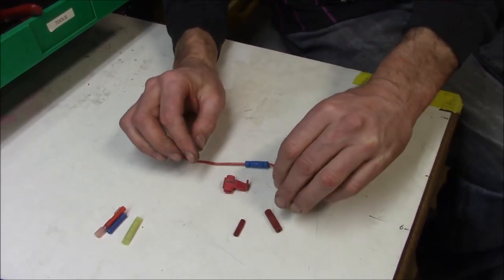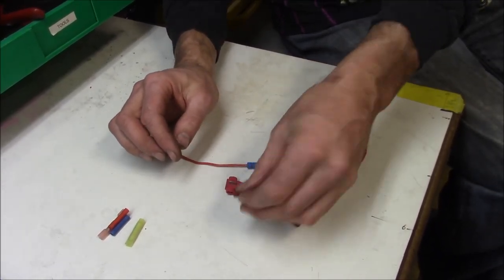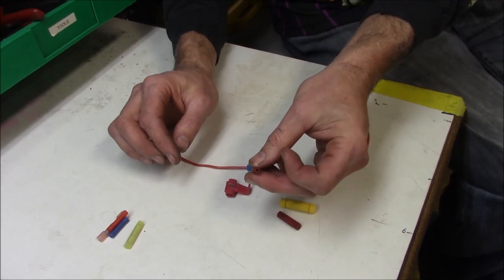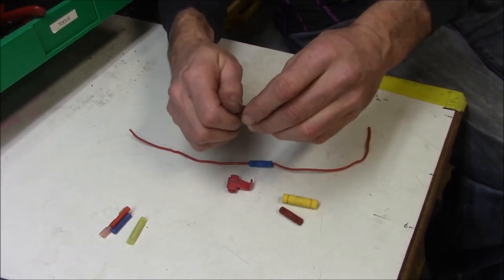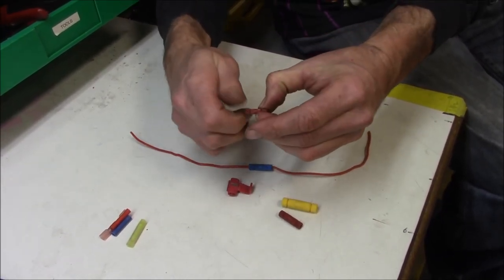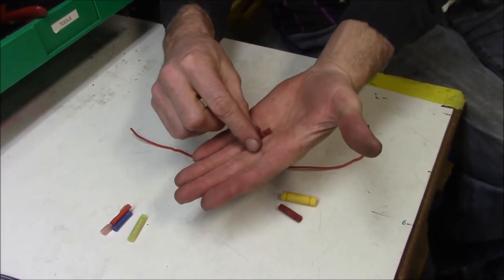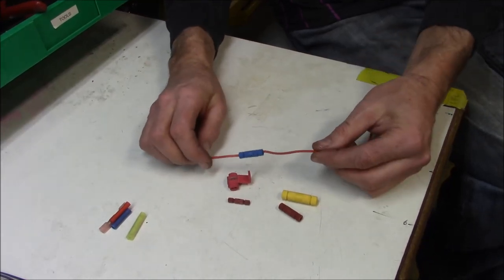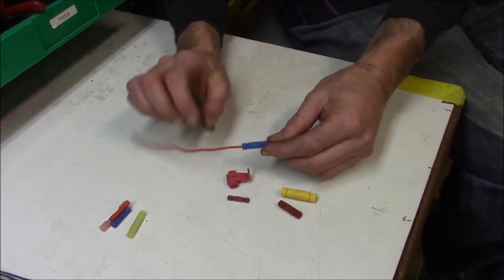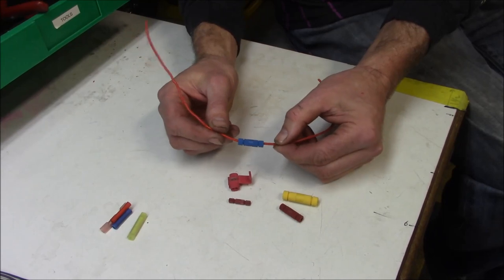It's the same way, it's kind of hard to see, but the ends unscrew just the same way. So that is a Posi Lock connector and how it works. It's just the same as wherever you were going to use a butt connector, you can now use one of these. And if you want to take it apart, just unscrew that and it comes right apart.